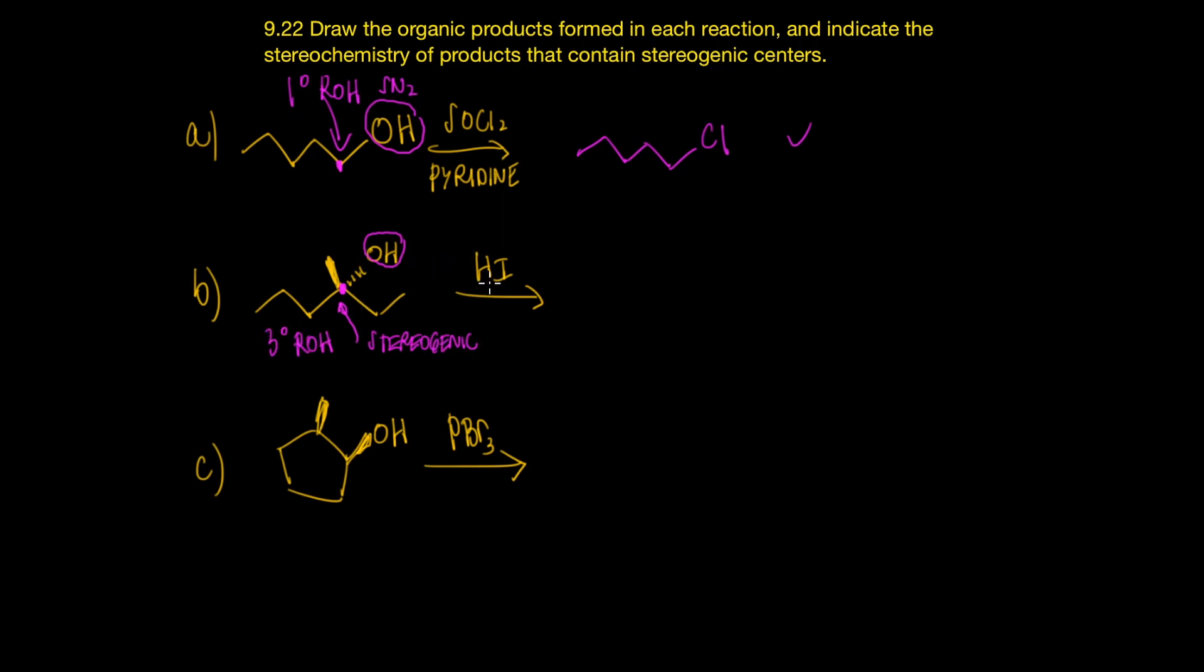So there are some additional things to think about. Tertiary alcohols react with HI through SN1, and SN1 gives you inversion and retention. Another way of saying that is that the carbocation is a planar intermediate, and the incoming iodide could attack the carbocation from the top face or the bottom face.